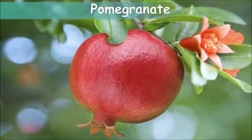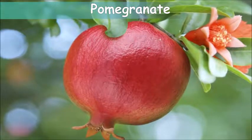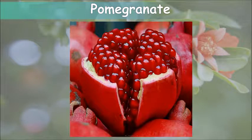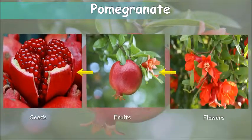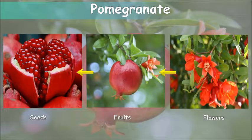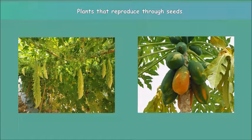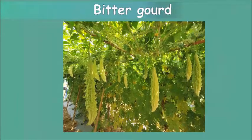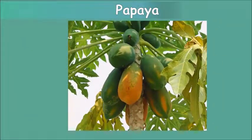Most plants such as pomegranates reproduce from seeds. Seeds, as you already know, are present inside the fruits, which in turn are developed from flowers. Some other examples of plants that reproduce through seeds are bitter gourd and papaya.